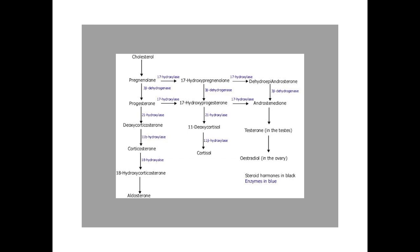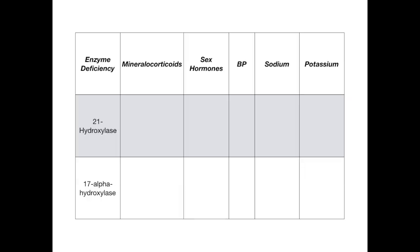Instead, what I'm going to focus on is what you do need to know specifically for all the steps and levels of USMLE and Comlex. If you flip through First Aid or whatever review textbook you're using, you'll notice there are normally three major adrenal enzyme deficiencies mentioned, and only two are really high yield: the 21-hydroxylase deficiency and the 17-alpha-hydroxylase deficiency. What the test writers expect you to know is being able to discern what happens to the mineralocorticoids, the sex hormones, the blood pressure, the sodium, and the potassium in each of these two disease states.